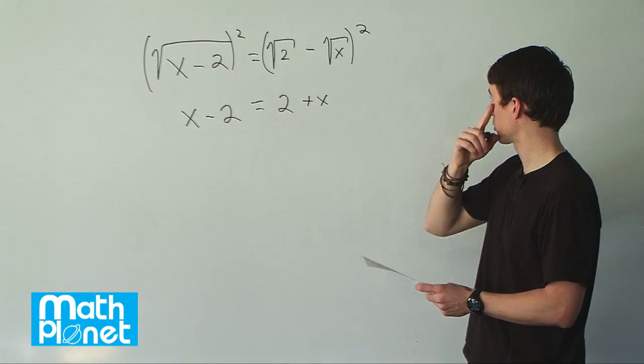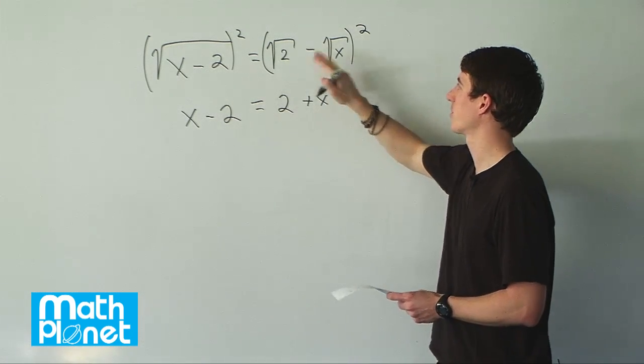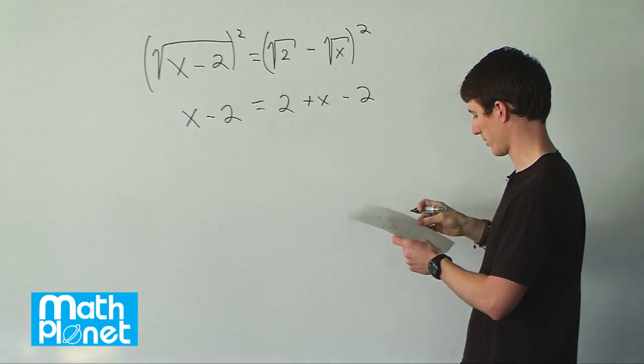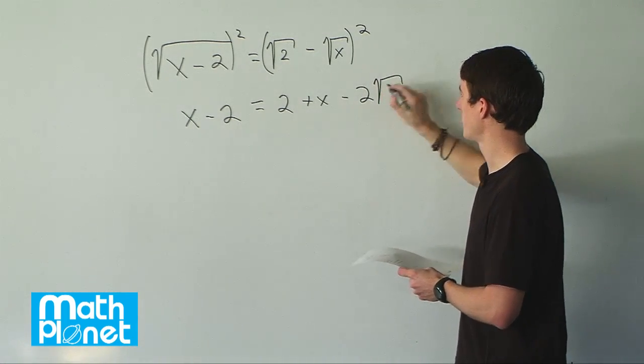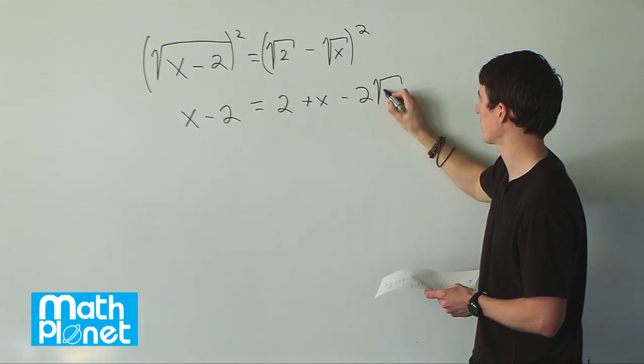Then we have a cross term, or two cross terms. This times this plus this times this. So we'll have negative 2 times these multiplied by each other. Negative 2 times root 2 times root x, which we can put together as 2x.